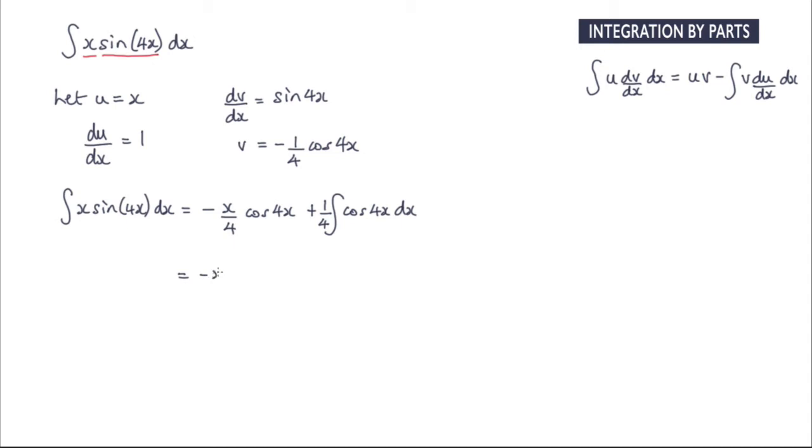So I have negative x over 4 cos of 4x and when I integrate cos 4x I will actually get one quarter sine 4x and the one quarter and this one quarter will give me 1 over 16.